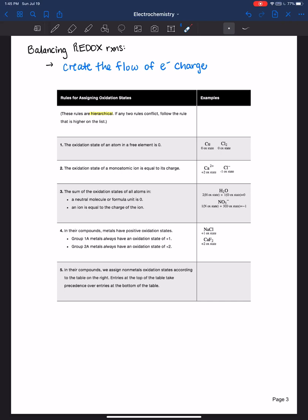In their compounds, metals have positive oxidation states. For example, group 1a metals always have an oxidation state of plus one. Group 2a metals always have an oxidation state of plus two.